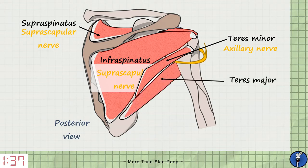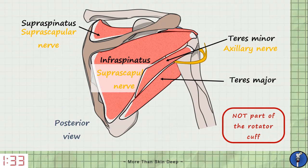Lastly we have teres major which is not part of the rotator cuff. This attaches to the intertubercular groove to extend, adduct, and internally rotate the arm. It is innervated by the lower subscapular nerve.